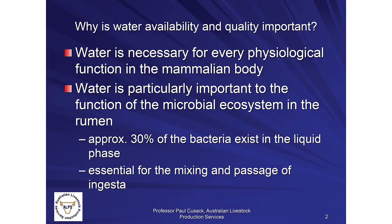Why is water availability and quality important? The mammalian body is largely water — we are very watery creatures — and water is necessary for every physiological function at a cellular and biochemical level. Considering the rumen particularly, it is the powerhouse that drives ruminant production, allowing ruminant animals to take human-indigestible fibrous feeds and turn them through fermentation into high-quality protein. That rumen requires water as a medium for bacterial species, protozoa, and fungi.